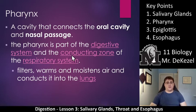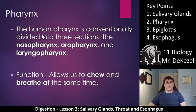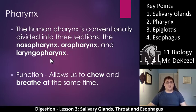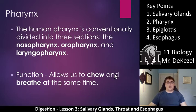The pharynx filters, warms, and moistens air when it conducts it into the lungs, but also directs food into the stomach via the esophagus. The human pharynx is conventionally divided into three sections: the nasopharynx is the top portion, the oropharynx is the middle portion, and the laryngopharynx is the lower portion. They are all part of the throat, and the function of the throat is to allow us to chew and breathe at the same time and move air and food through the same passage.